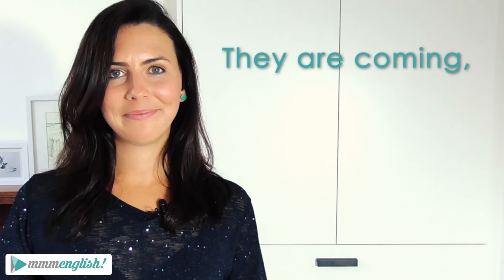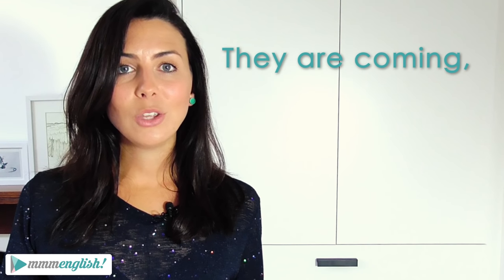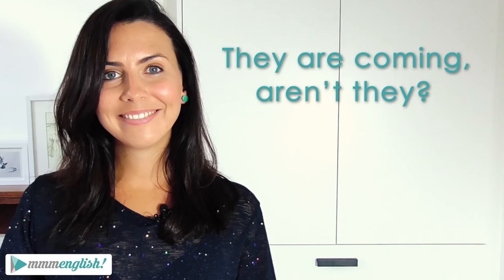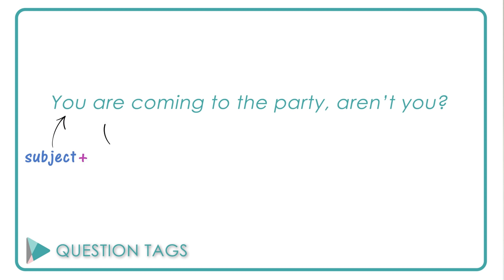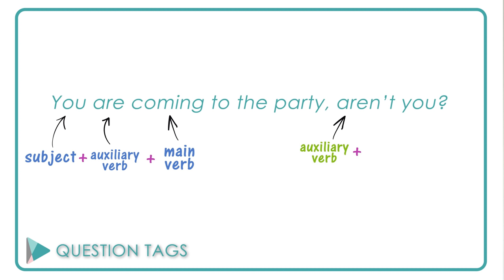So let me show you how to use question tags — it's simple. You take a statement: They are coming. And then you add your question tag: Aren't they? We have our subject, an auxiliary verb, and our main verb in our statement. And in our question tag, we've also got our auxiliary verb, a negative — we have 'not' — and a personal pronoun which matches the subject.